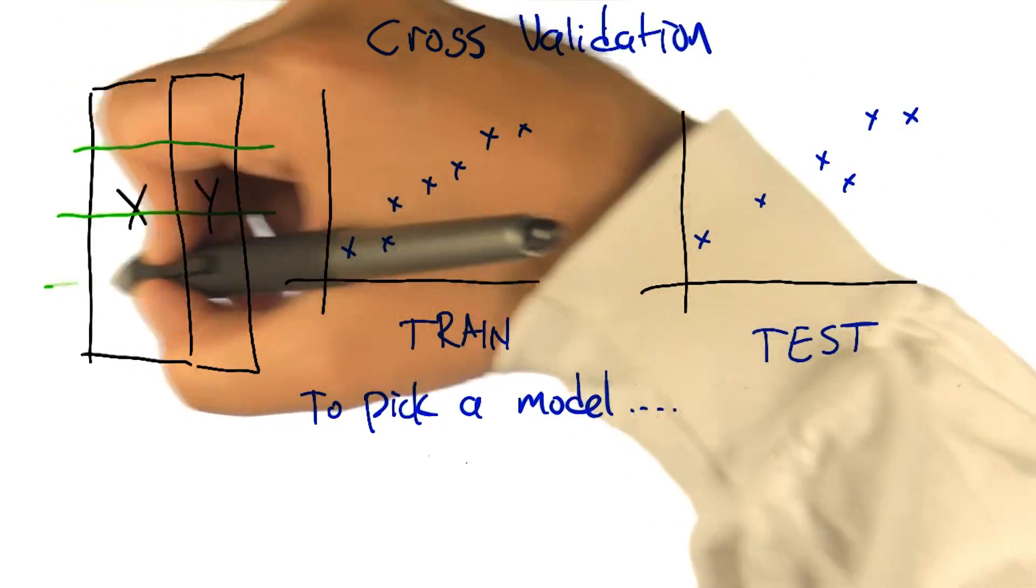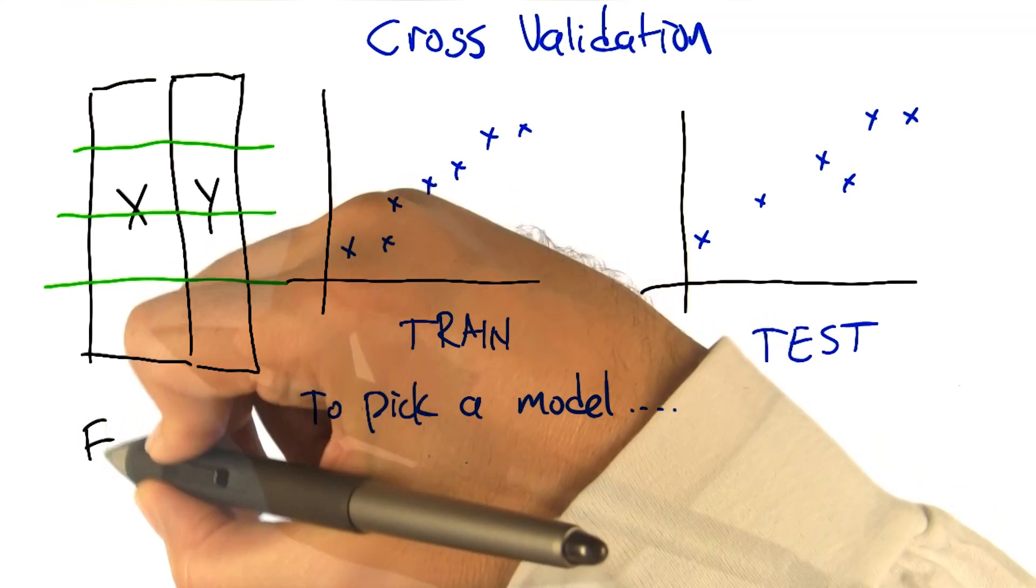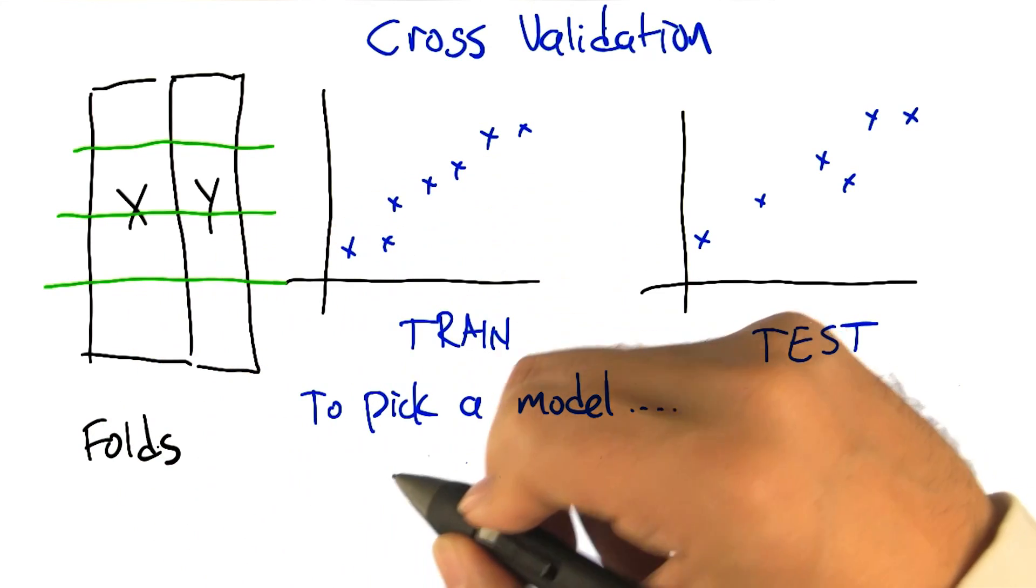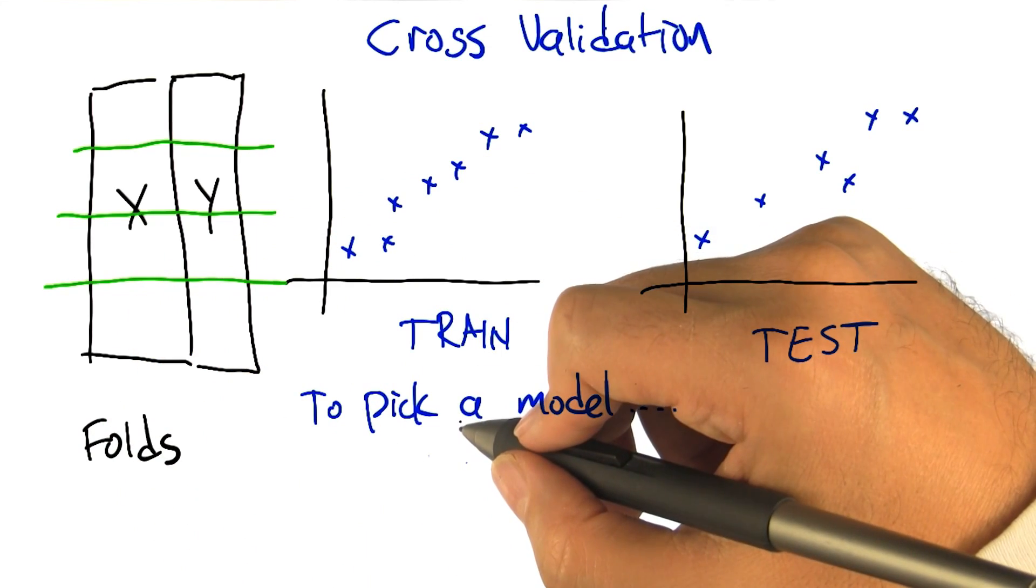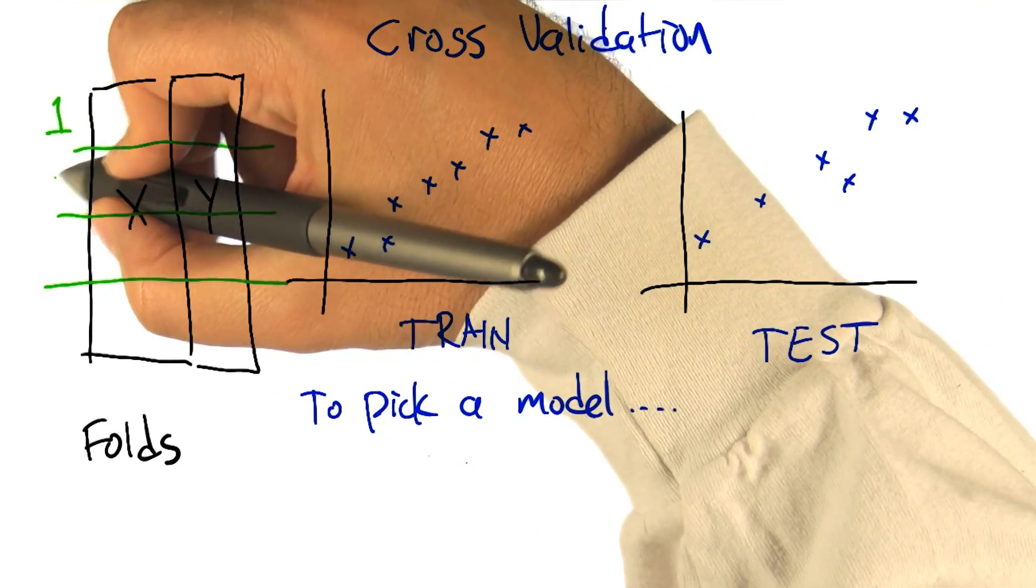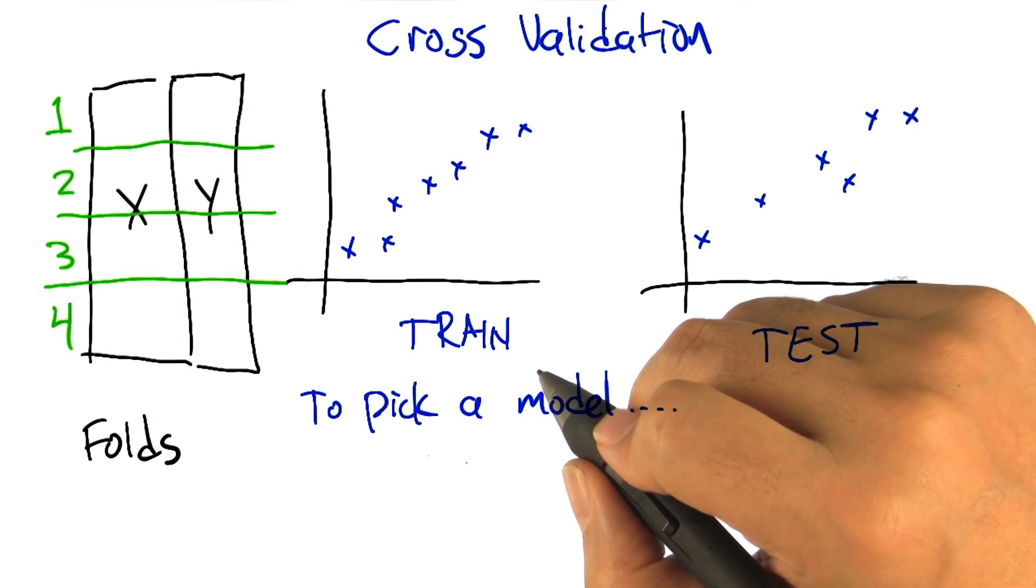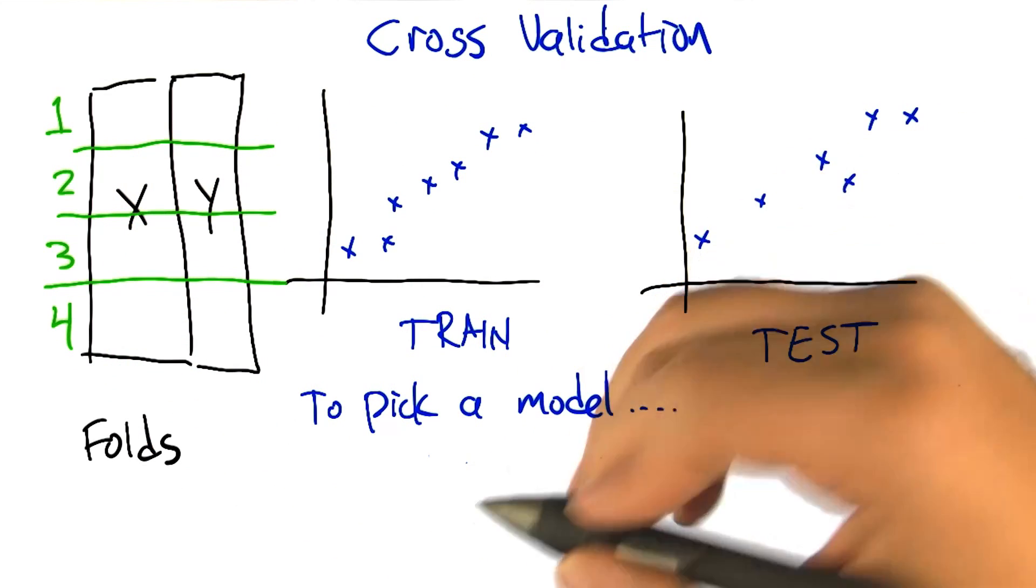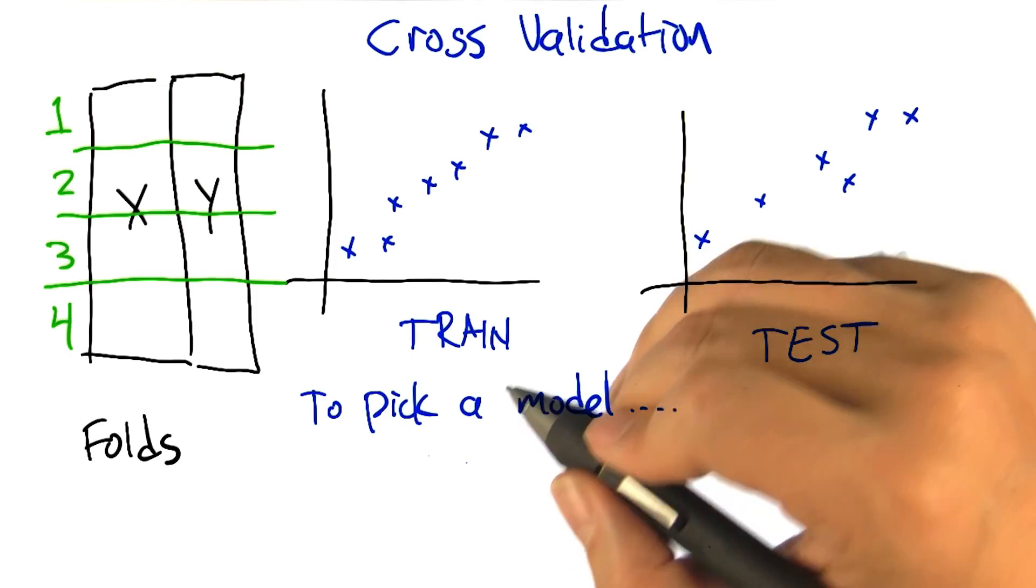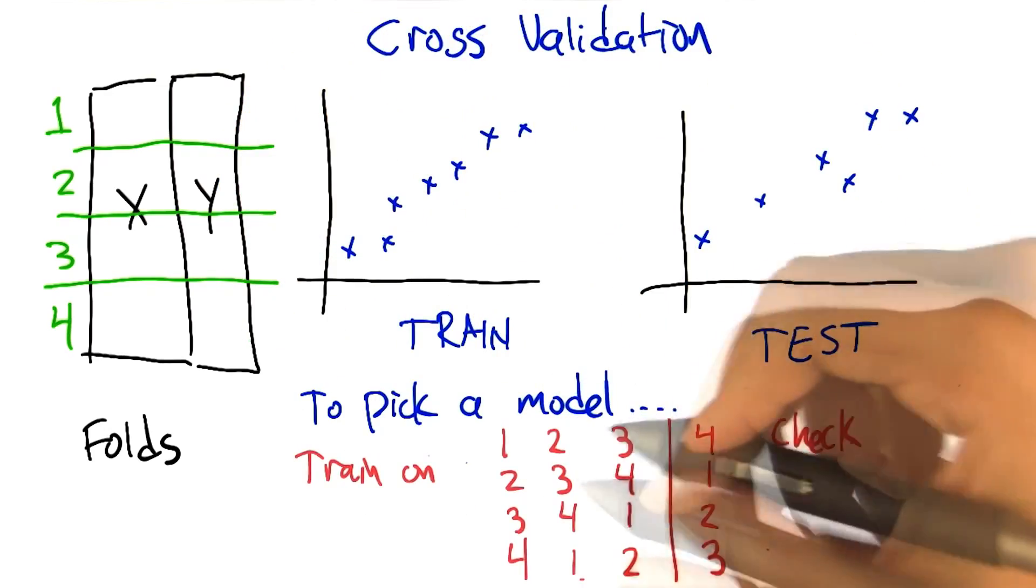We're going to take our training data and we're going to split it into what are called folds. I'm not actually sure why they're called folds. I don't know if that's a sheep reference. Why would it be a sheep reference? I think there's a sheep related concept that is called a fold. Like, you know, we're going to bring you back into the fold. Oh. It's like the group of sheep. You are just chock full of knowledge.